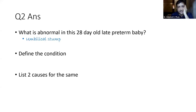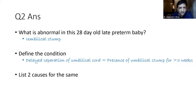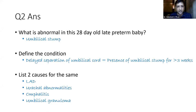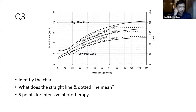It is the umbilical stump — since it's a 28-day-old baby, the umbilical stump has still not fallen off. This is delayed separation of the umbilical cord, generally defined as presence of the umbilical stump for more than three weeks. Causes include immunological causes like leukocyte adhesion defect, persistent urachus, omphalitis, or a simple umbilical granuloma. These kinds of spotters require you to be very careful in identifying the exact abnormality.